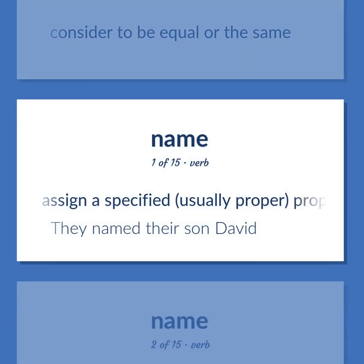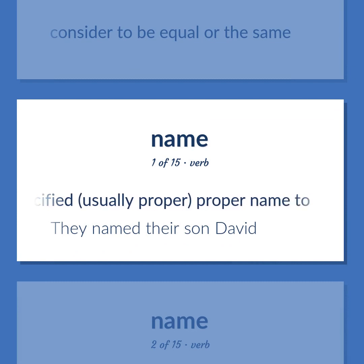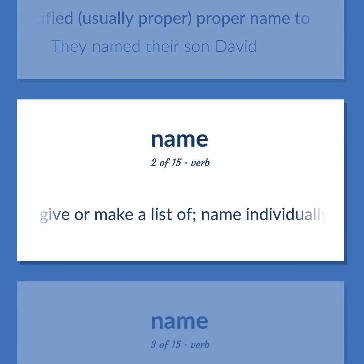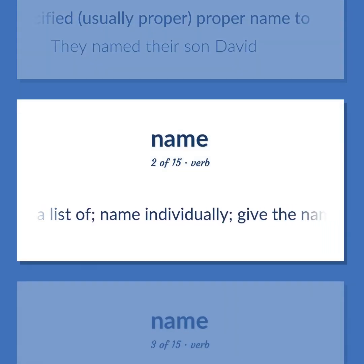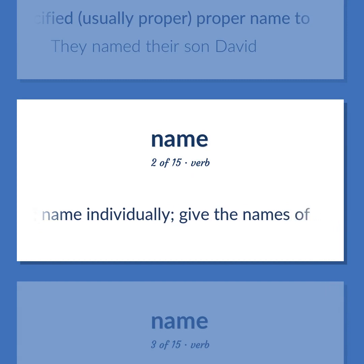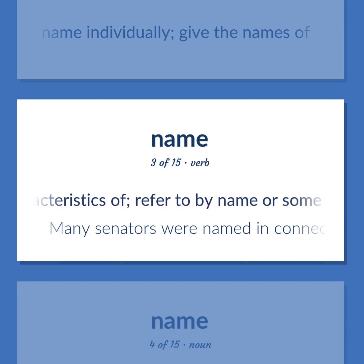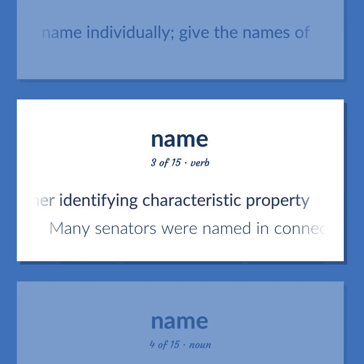Name: Assign a specified, usually proper, name to — 'They named their son David.' Give or make a list of; name individually; give the names of. Give the name or identifying characteristics of; refer to by name or some other identifying characteristic property. 'Many senators were named in connection with the scandal.'